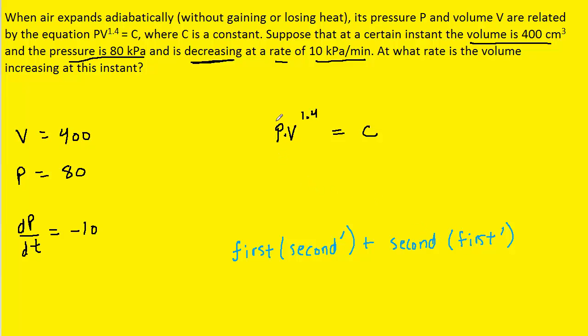In this case, the first function would be P and the second function would be the V to the 1.4. So let's follow the product rule and differentiate the left side of this equation. Remember that we're taking the derivative with respect to time.